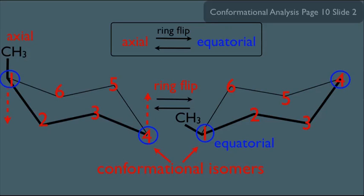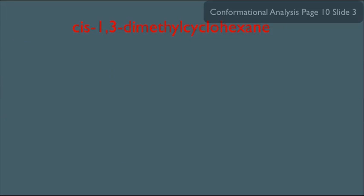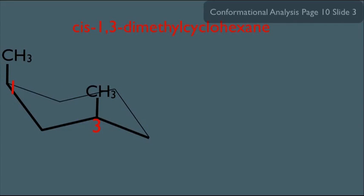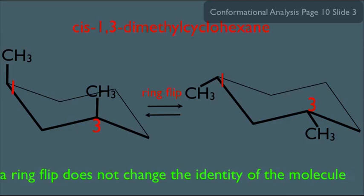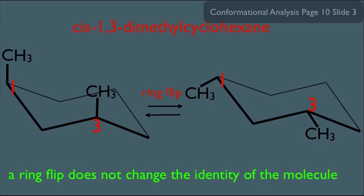Going back to our cis-1,3-dimethylcyclohexane: notice that one answer had both methyls axial, and the other acceptable answer had both methyls equatorial. These are technically just the ring flip versions of each other — the axial methyls flipped over to equatorial positions. A ring flip does not change the identity of the molecule, which is another way of saying that a conformational isomer may be a different conformation, but it's still the same molecule. Both of these conformational isomers are still cis-1,3-dimethylcyclohexane.